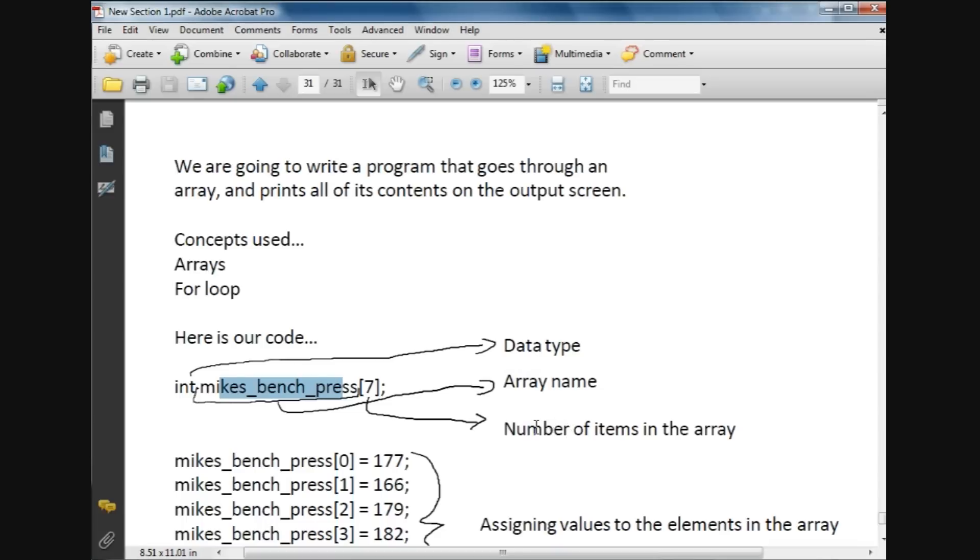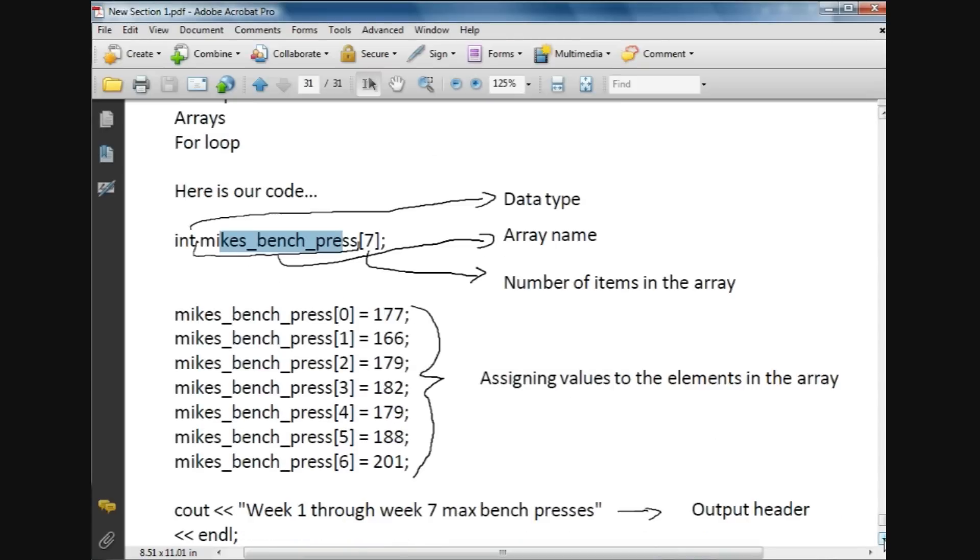Seven is the number of items inside the array, and I've used the first method that we learned in the last tutorial. In giving values to each of the elements in the array, we have the array name: element 0 is going to equal 177, element 1 is 166, and so on. So we've assigned values to all of the elements 0 through 6 in the array.